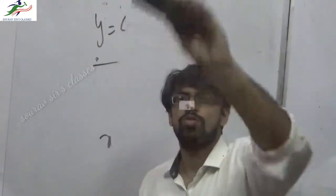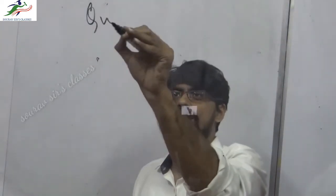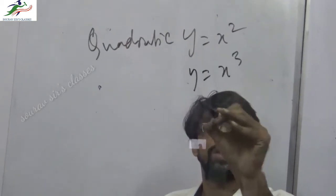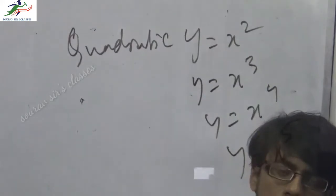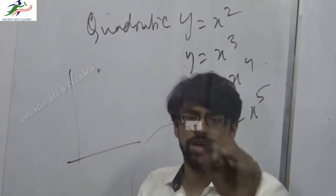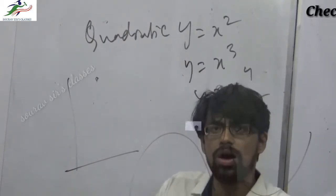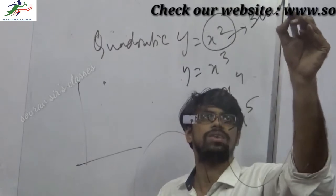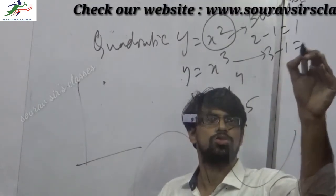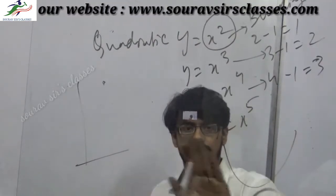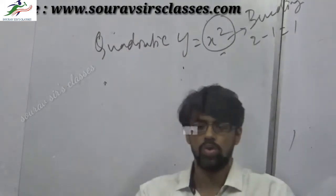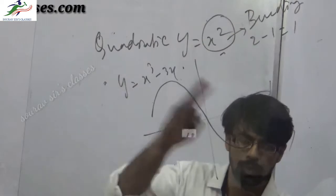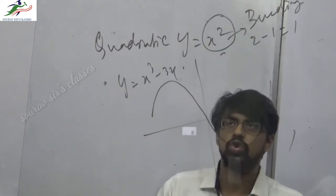Now moving to quadratic graphs: y equals x squared. If the powers keep increasing — x squared, x cubed, x to the fourth — the graph shape changes. The key rule for bending points is: number of bending points equals the power minus 1. So for power 2, there is 1 bending point; power 3 gives 2 bending points; power 4 gives 3 bending points. For example, y equals x cubed minus 3x produces a typical cubic curve with two bending points.